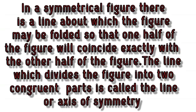In a symmetrical figure, there is a line about which the figure may be folded so that one half will coincide exactly with the other half. The line which divides the figure into two congruent parts is called the line or axis of symmetry.